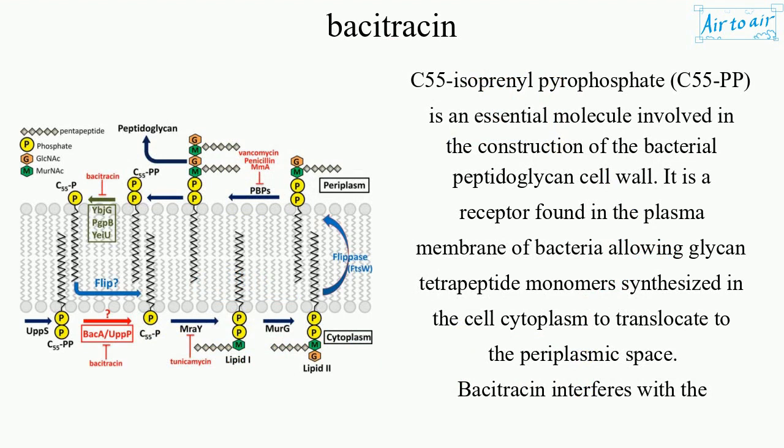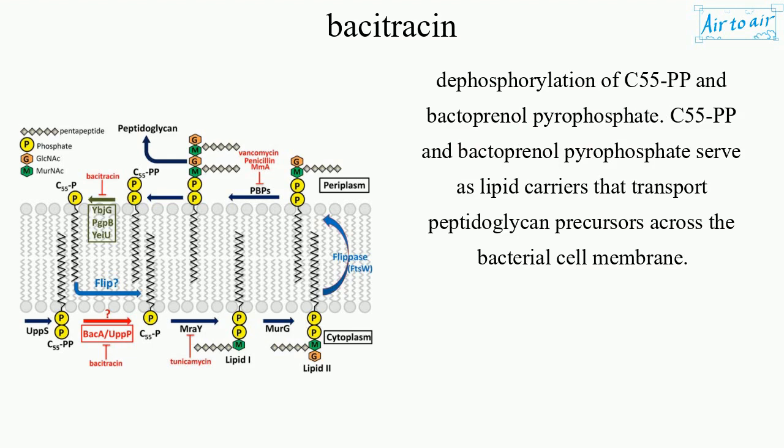C55-isoprenyl pyrophosphate (C55PP) is an essential molecule involved in the construction of the bacterial peptidoglycan cell wall. It is a receptor found in the plasma membrane of bacteria, allowing glycan tetrapeptide monomers synthesized in the cell cytoplasm to translocate to the periplasmic space. Bacitracin interferes with the dephosphorylation of C55PP and bactoprenol pyrophosphate, which serve as lipid carriers that transport peptidoglycan precursors across the bacterial cell membrane.